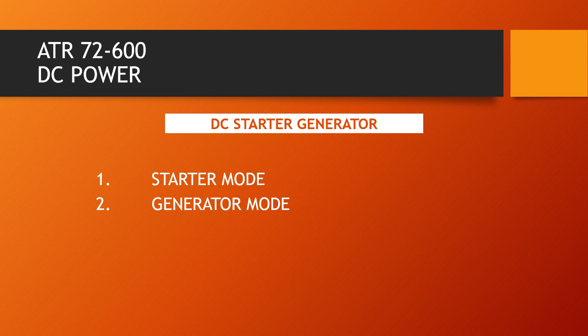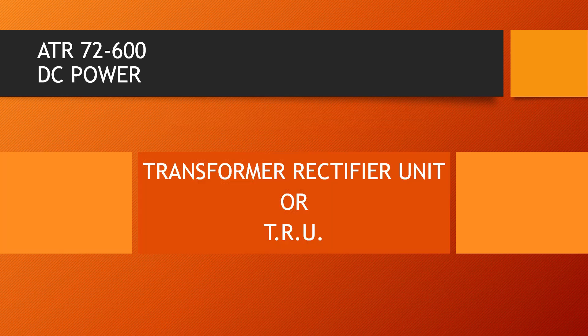Each generator feeds the associated DC bus through a generator contactor. A TRU is installed in order to maintain DC supply when DC power is under emergency conditions or both generators have failed. In this configuration, the emergency DC system can be supplied by the TRU. The TRU mainly converts ACW to DC.